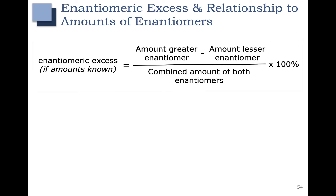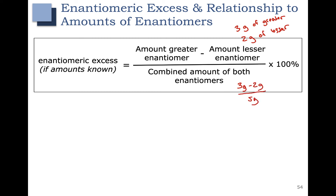What if you know your amounts of enantiomers and want to calculate enantiomeric excess? All we need to do is take the amount of the greater enantiomer, subtract the amount of the lesser enantiomer, and divide over the total amount of both enantiomers. For example, if we have 3 grams of the greater enantiomer and 2 grams of the lesser enantiomer, I would take 3 grams minus 2 grams, divided over 5 grams, multiplied by 100% to get 20% EE.